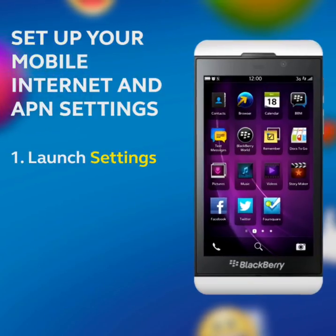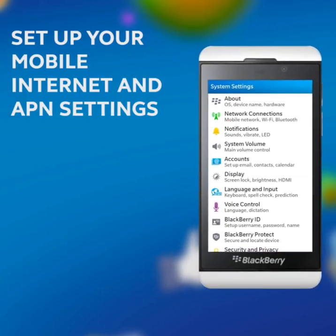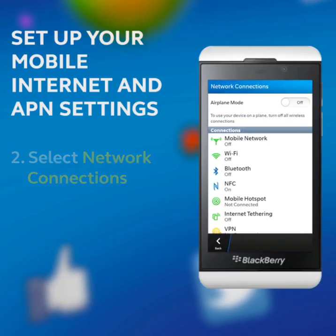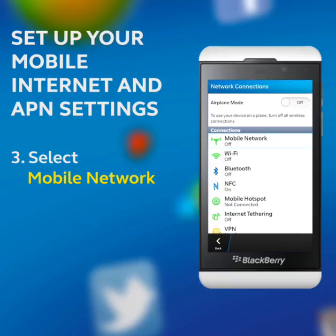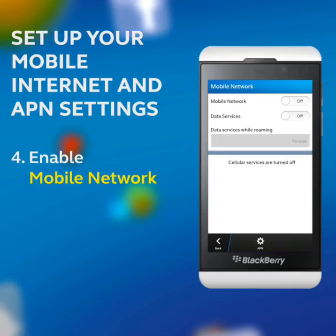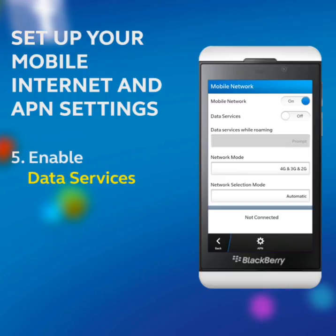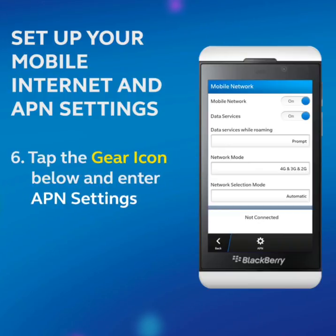Launch Settings. Select Network Connections. Select Mobile Network. Enable Mobile Network. Enable Data Services. Tap the gear icon below and enter APN settings.